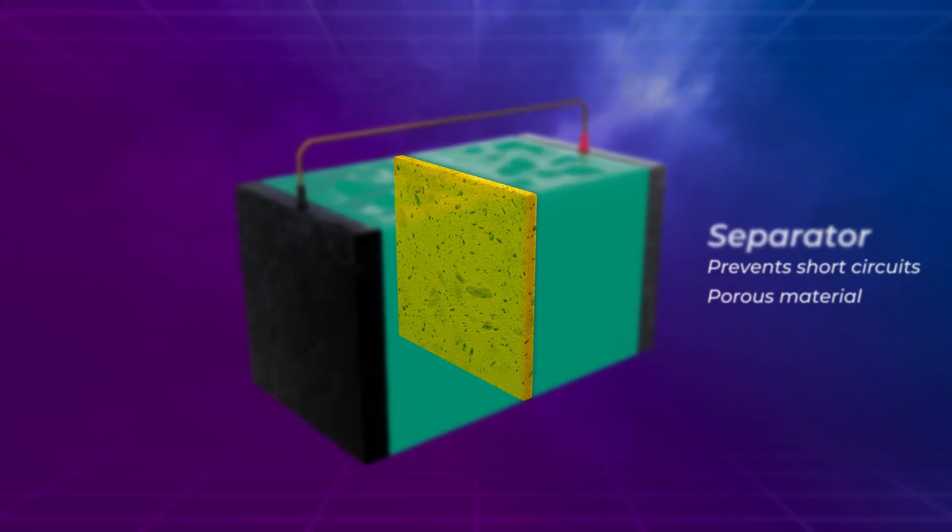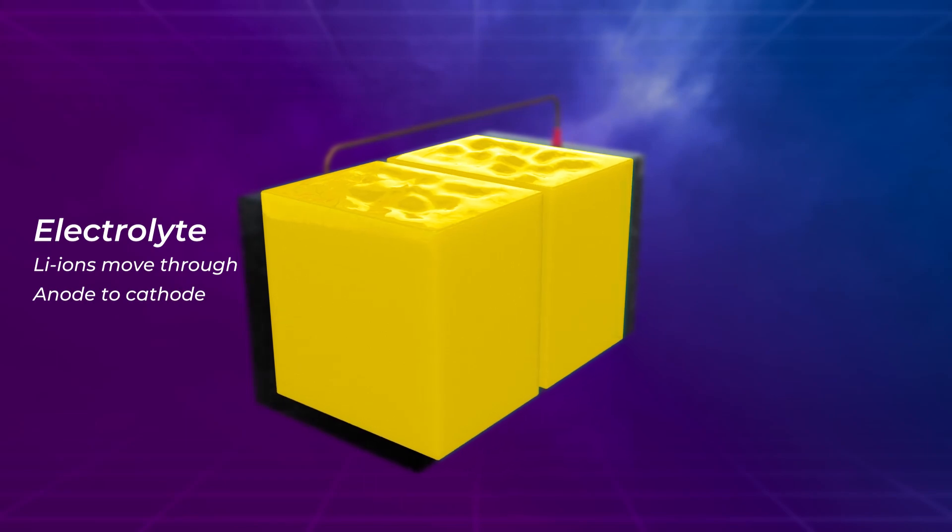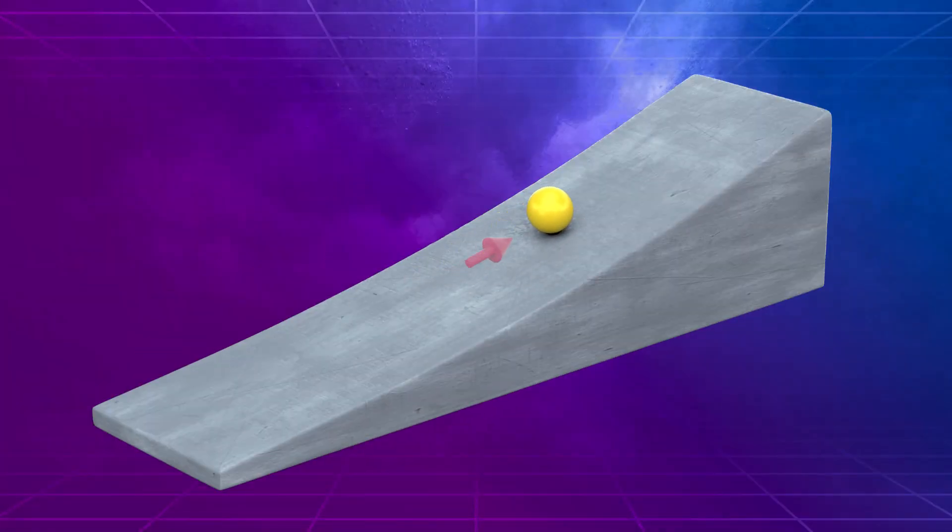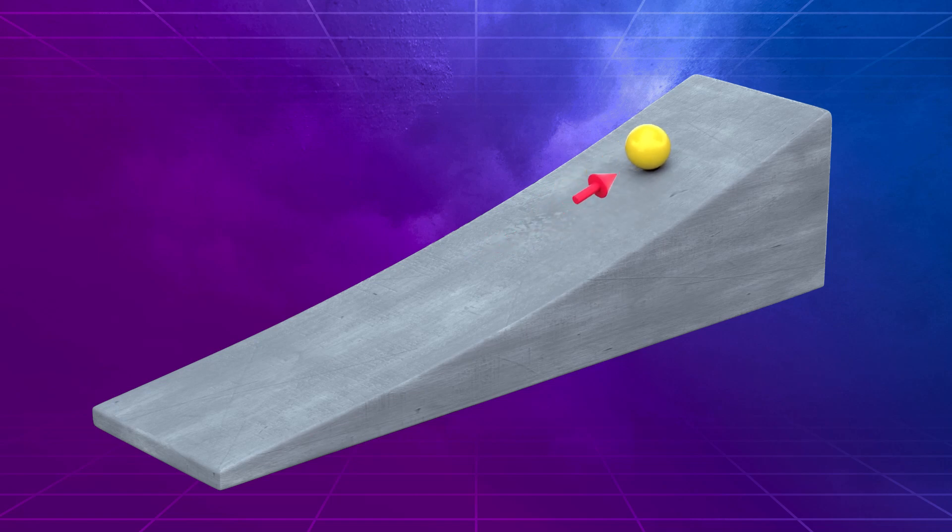And an electrolyte through which lithium ions move from the anode to the cathode. A battery can be thought of as the electrochemical equivalent of rolling a ball uphill, which requires work to be put into the system, and letting it roll back downhill on its own to release stored energy.